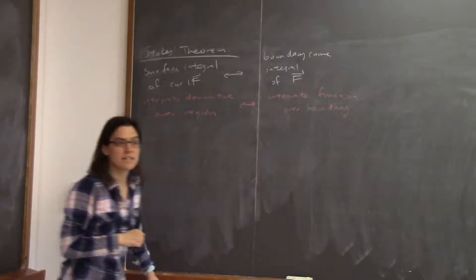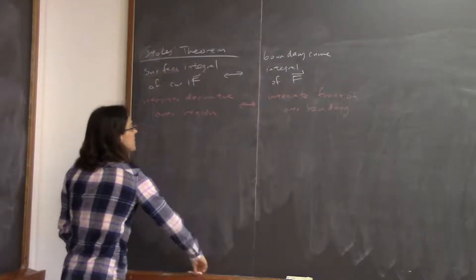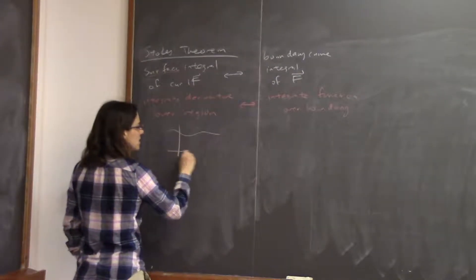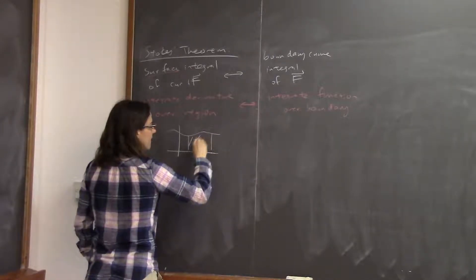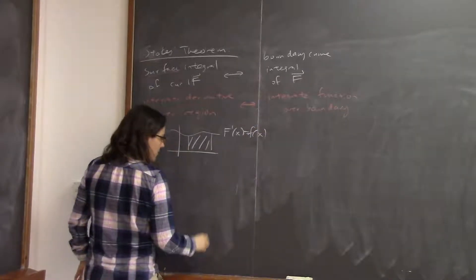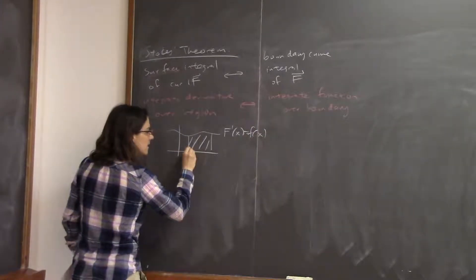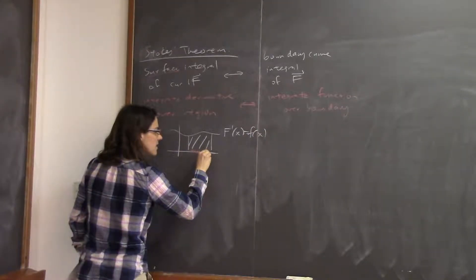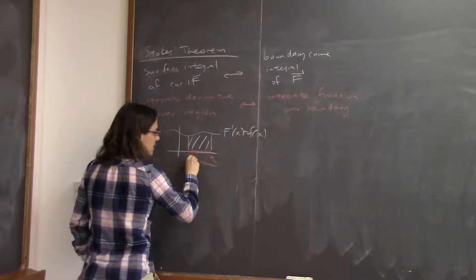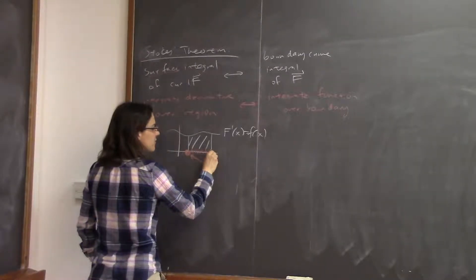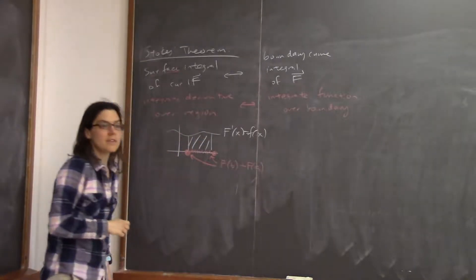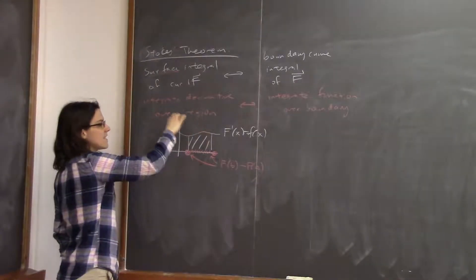This is along the same lines as the fundamental theorem of calculus. Curl of F is a bunch of derivatives, so this tells you that you can integrate the derivative of some function over the region — in this case the surface — and it's the same as integrating the function over the boundary. The boundary of an interval is just two points, so you do F(b) minus F(a). That's the fundamental theorem of calculus — it's the same idea.